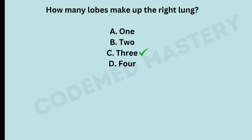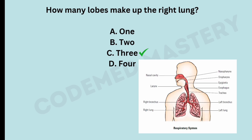How many lobes make up the right lung? The right answer is option C, 3. The right lung has three lobes and the left lung has two lobes, mainly due to space constraints created by the heart's position. The heart tilts slightly to the left side of the body, occupying a space known as the cardiac notch in the left lung. This reduces available space for lung tissue, resulting in only two lobes in the left lung.